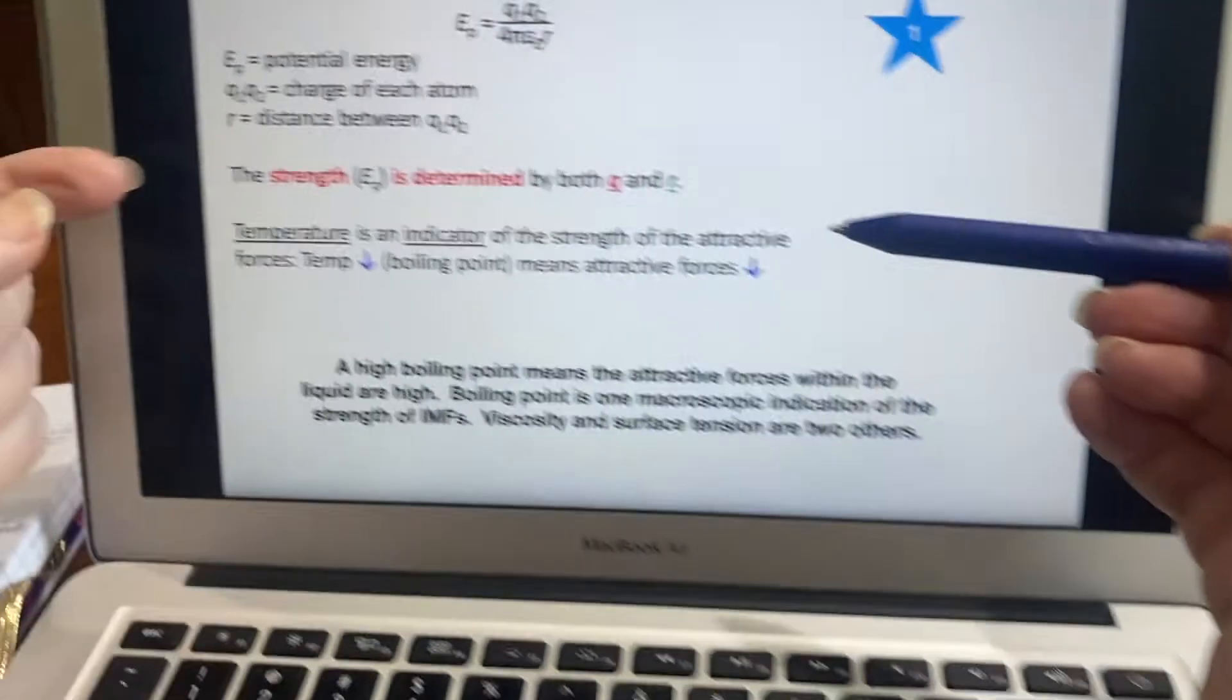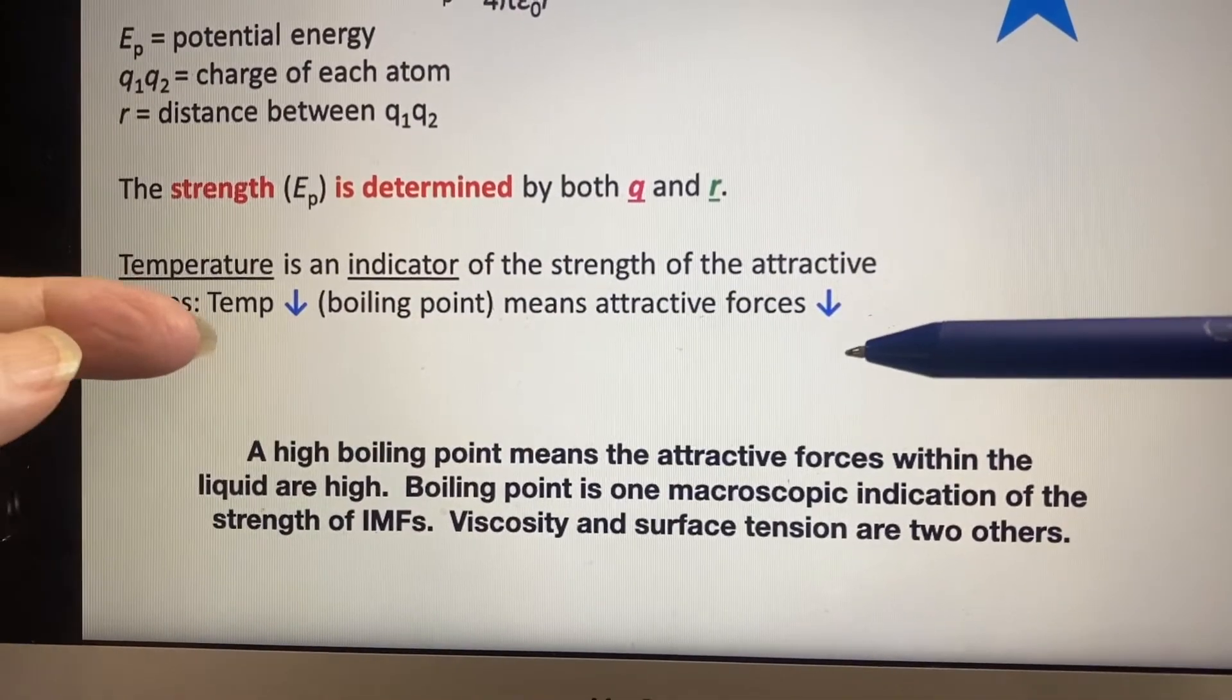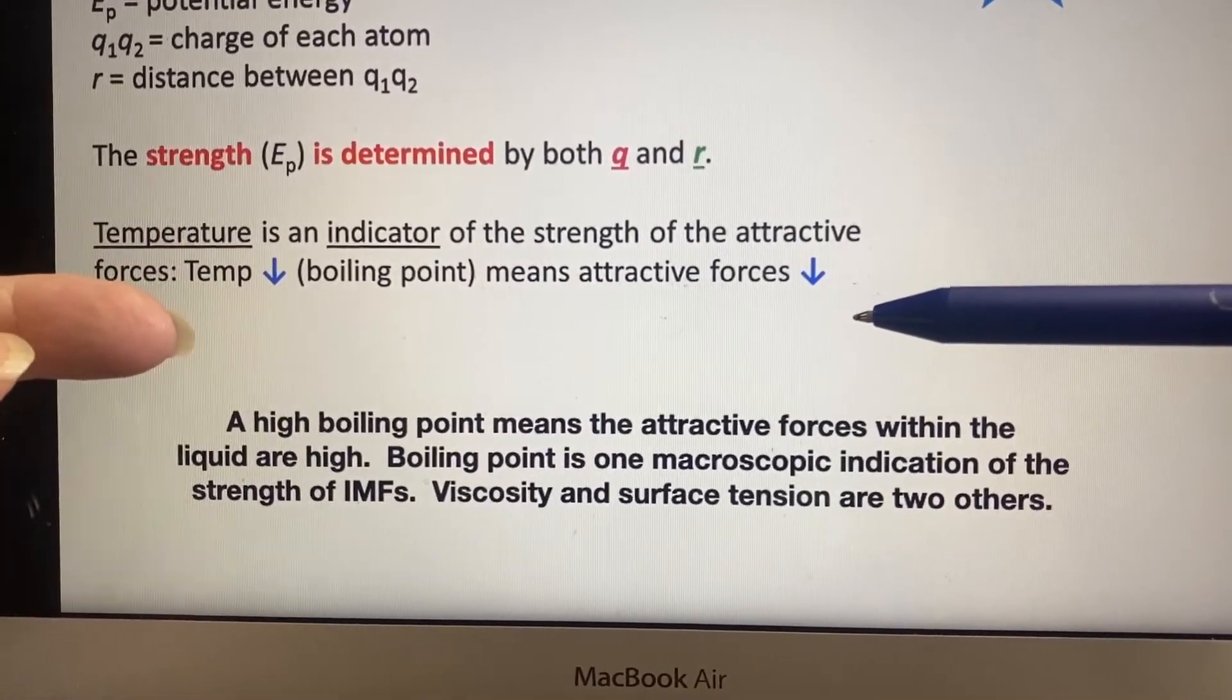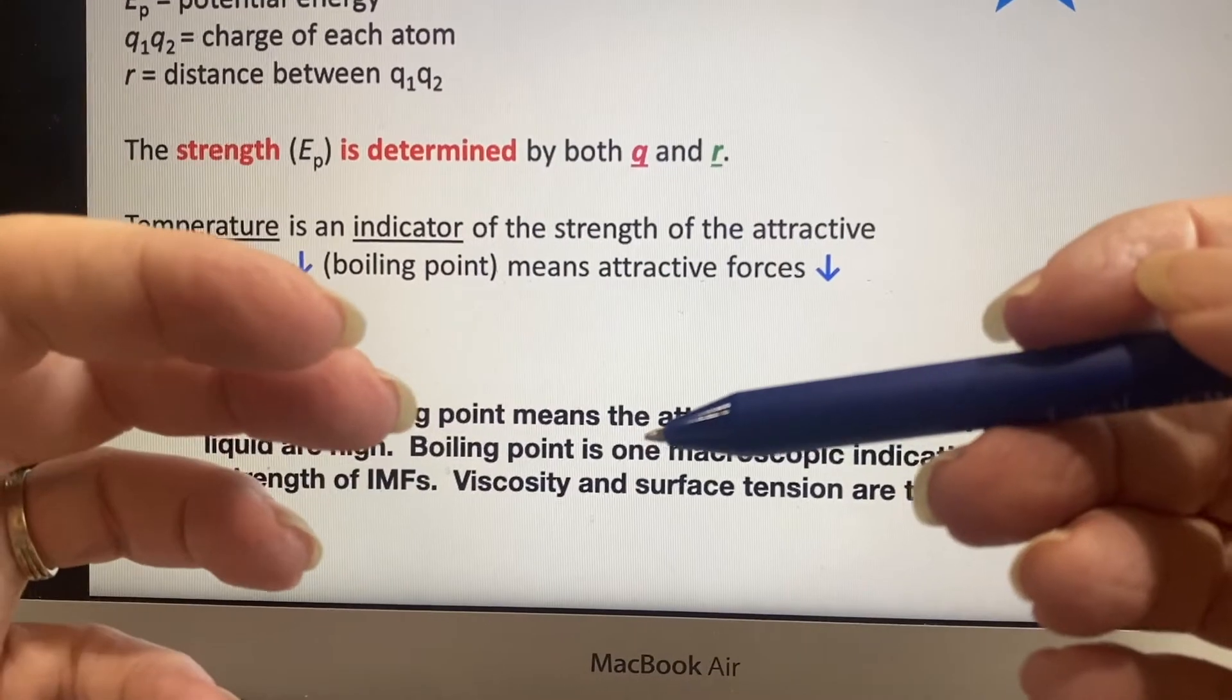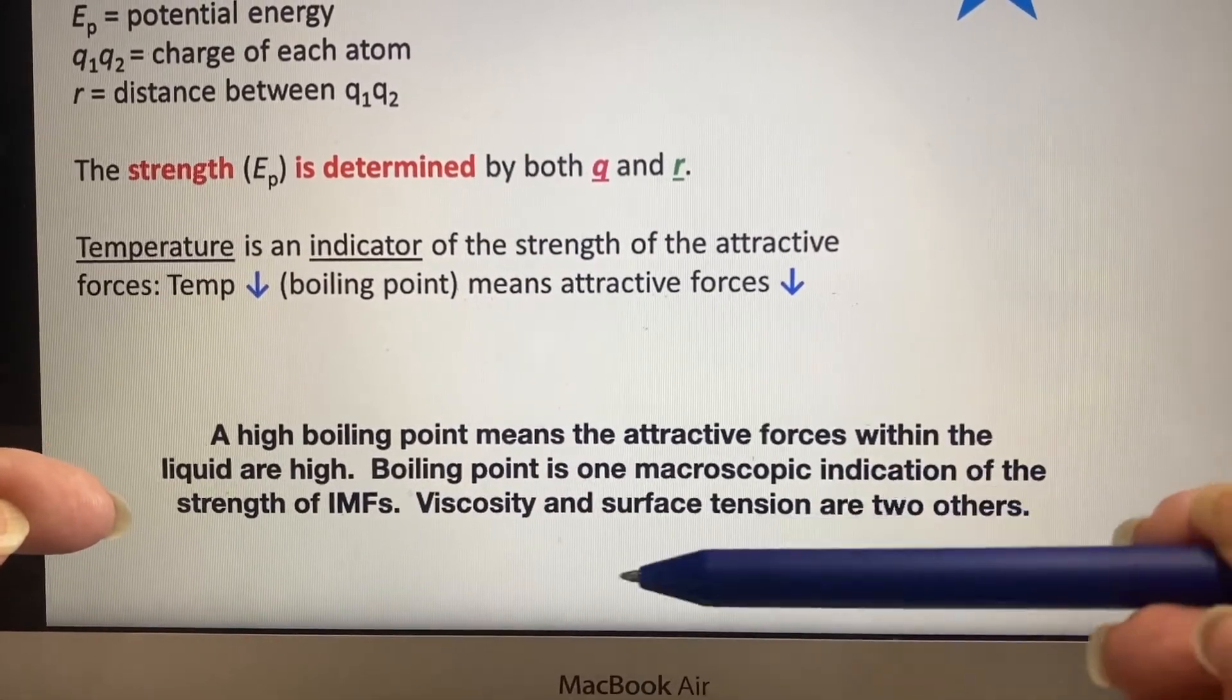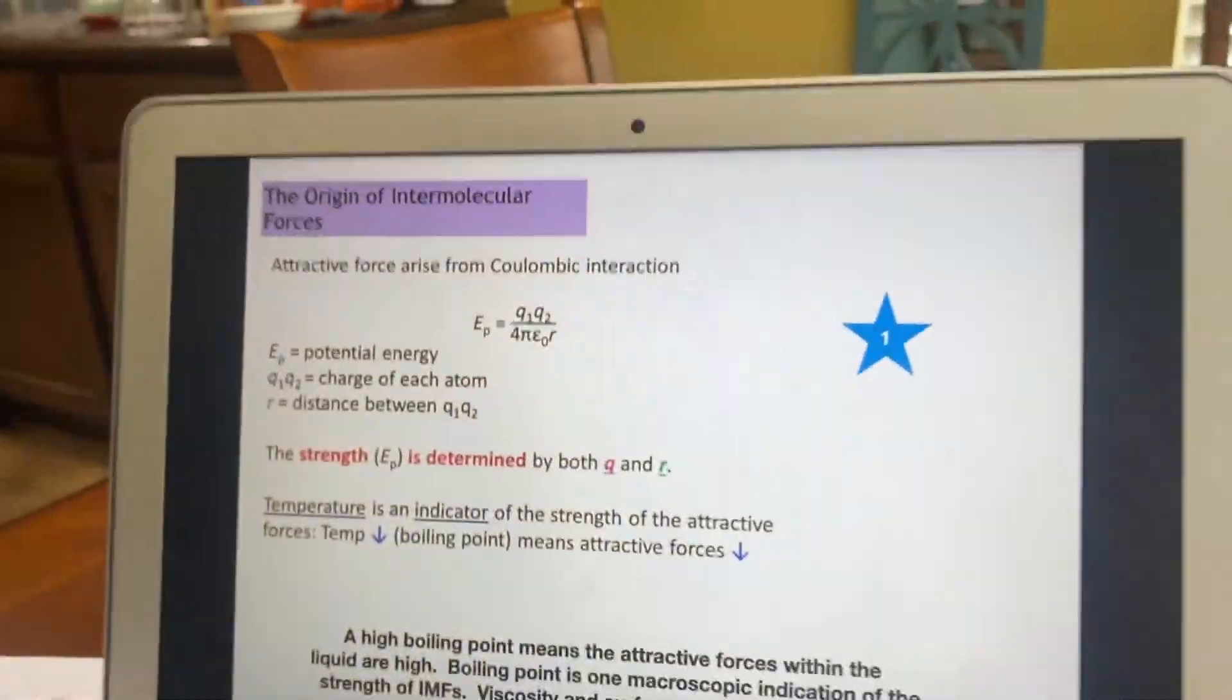Now, on the macroscopic scale, temperature helps give you an idea of how strong these attractive forces are. If the temperature is low at the boiling point, it means the attractive forces are also low. If you have to go to a high temperature in order to boil something, it means that the attractive forces are very high. They're keeping it together longer. The things have to have more energy before they can get away. So boiling point is a macroscopic indicator. And so are a couple of other properties, viscosity and surface tension. Those tell you a lot about the attractive forces.